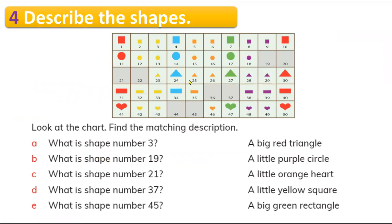Now it's practice time — it's going to be so easy! Look at this pattern and answer these questions. Here is question A with the options. What is shape number three? Where is number three? Shape number three — what color is it? It's yellow. Is it small or big? You're right, it is small — a small yellow square. So you need to match the small yellow square here.